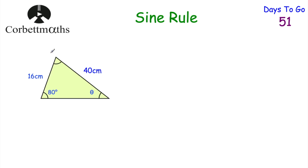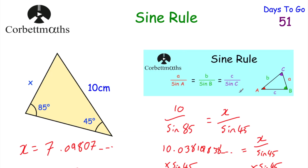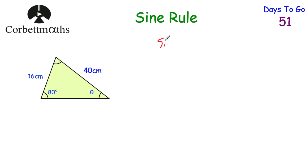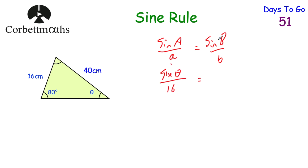Let's look at our next question. This time we've been asked to find the size of angle theta. We can use the sine rule to find lengths of sides using a over sin A equals b over sin B equals c over sin C. Whenever we find the size of angles, I tend to flip this over, writing sin A over a equals sin B over b equals sin C over c — so we find the reciprocals. Let A be theta. We've got sin theta over 16 equals sin 80 over 40, where 40 centimetres is the length of the side opposite the 80-degree angle.